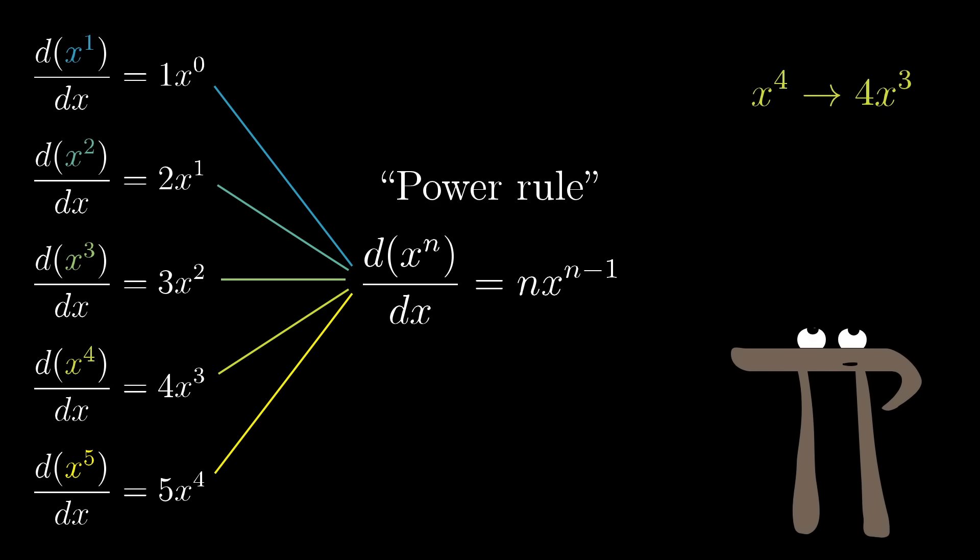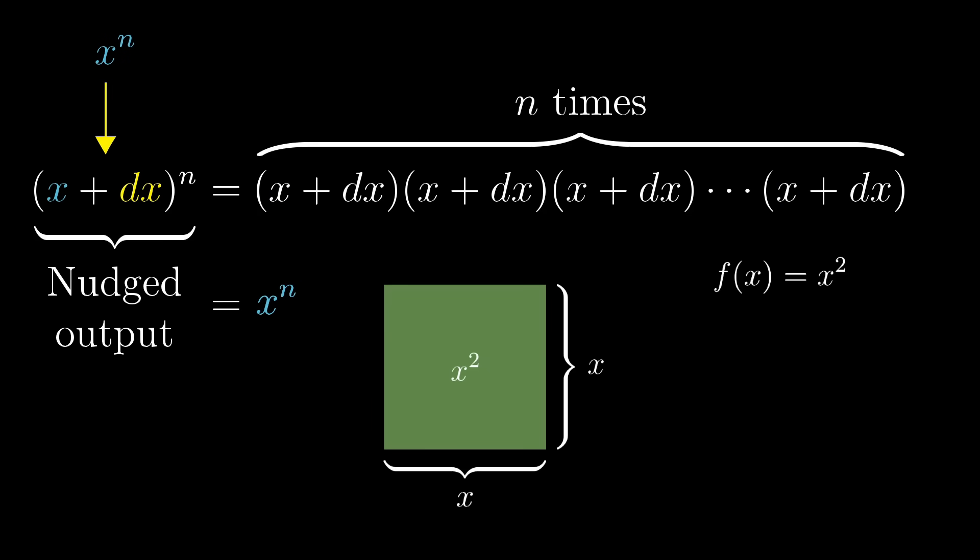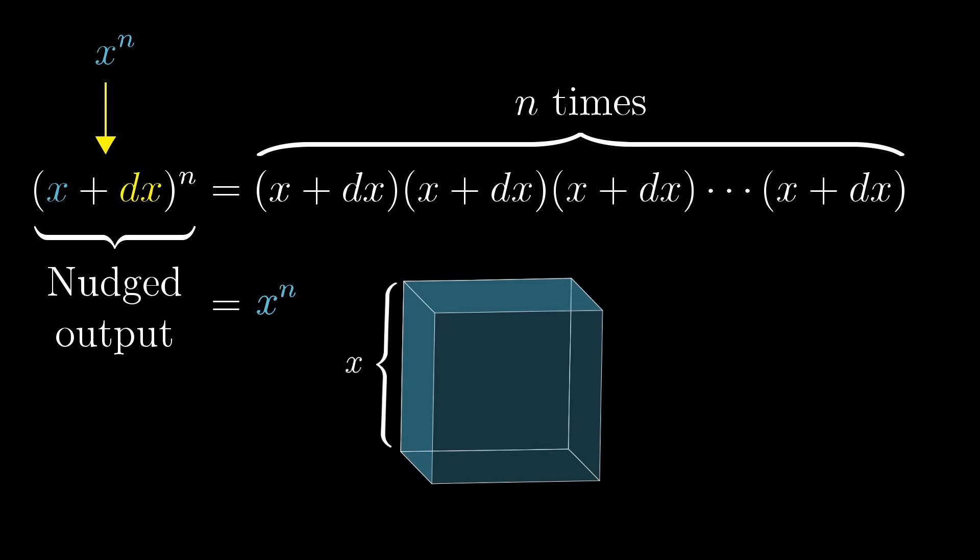But rather than chucking it all off to symbolic patterns, let's just take a moment and think about why this works for powers beyond just 2 and 3. When you nudge that input x, increasing it slightly to x plus dx, working out the exact value of that nudged output would involve multiplying together these n separate x plus dx terms. The full expansion would be really complicated, but part of the point of derivatives is that most of that complication can be ignored.